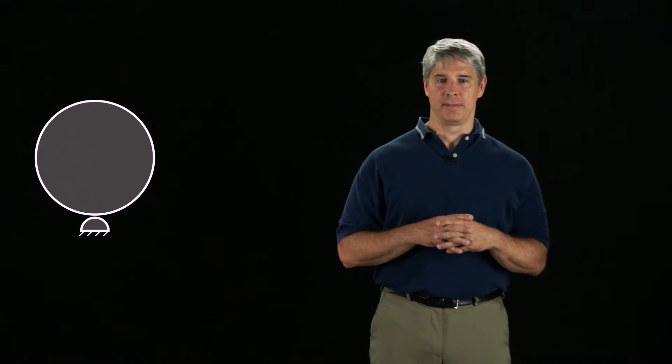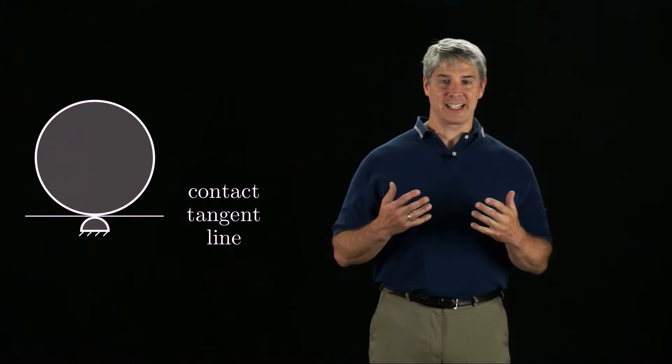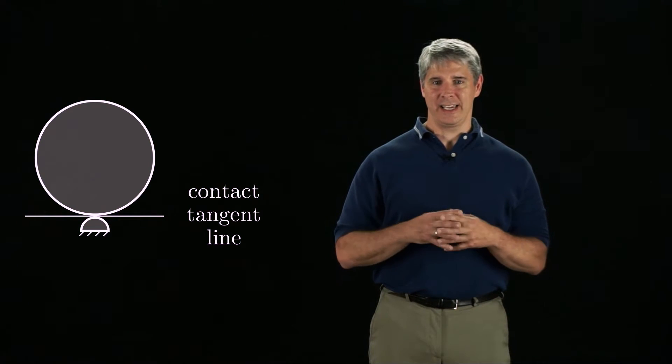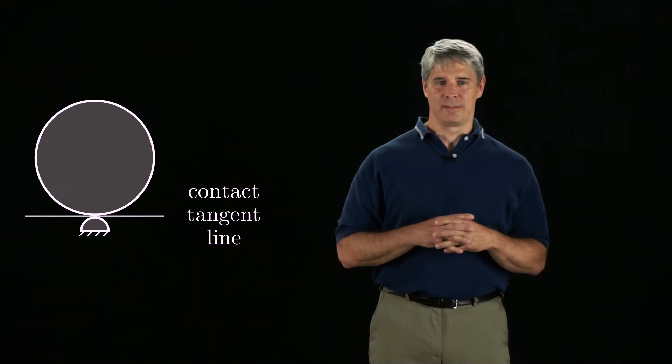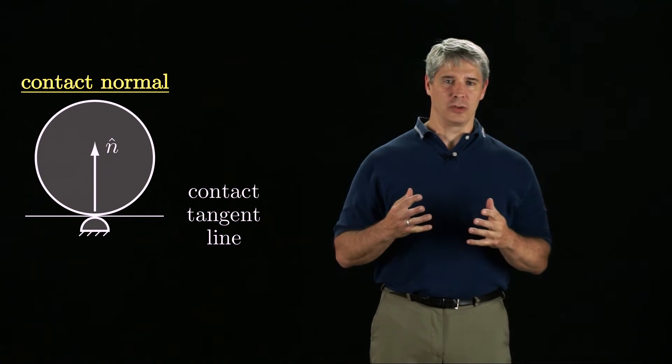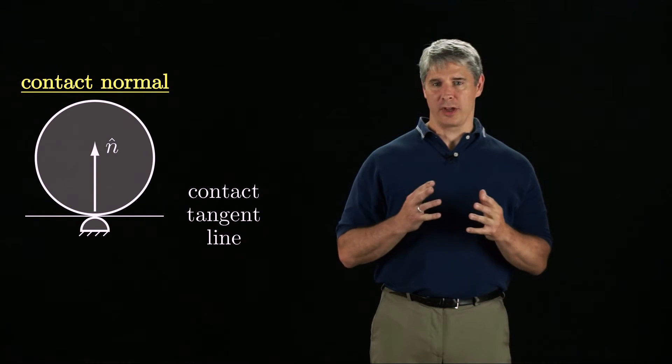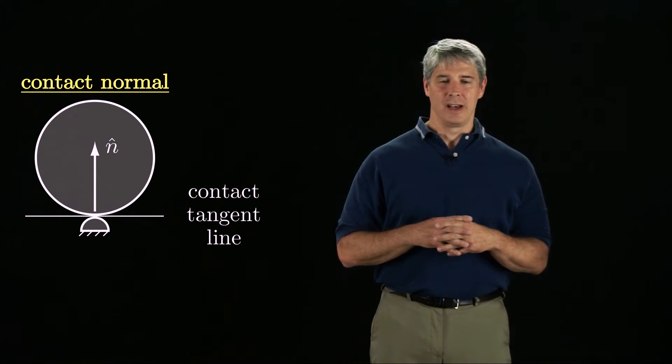Consider this planar disk contacted by a stationary constraint. This constraint could be a robot finger, a workpiece fixture, or some other part of the robot or the environment. We define the contact tangent line to be the line tangent to the bodies at the contact. We also define the contact normal n to be a unit vector orthogonal to the tangent line.